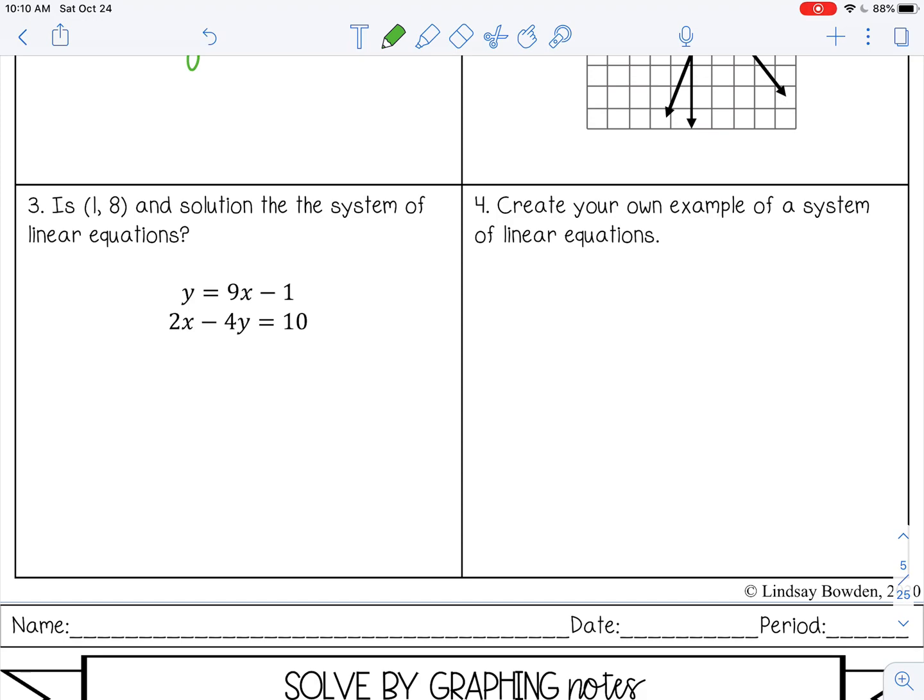So let's do that with the first one. This is x and y, so 8 equals, substitute in 1 for x, 9 times 1 is 9 minus 1. 9 minus 1 is 8, so that works for the first one, but it's not a solution to both unless it works for both.